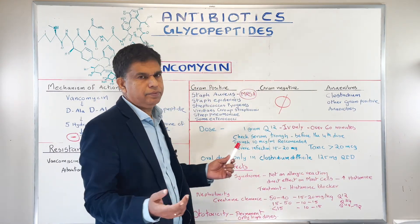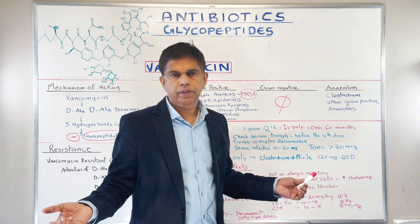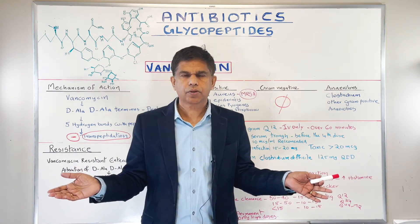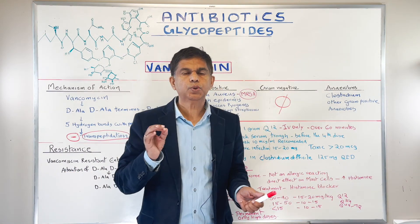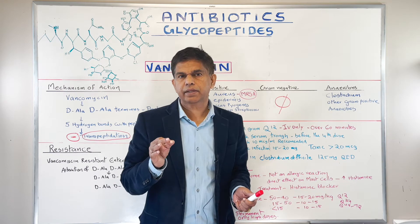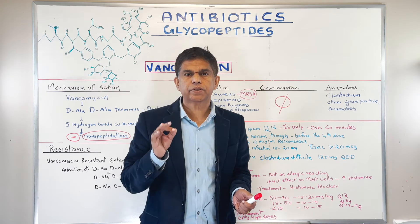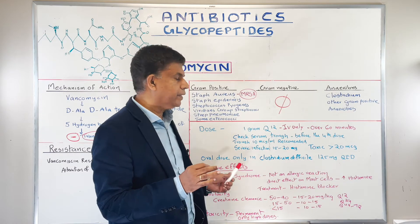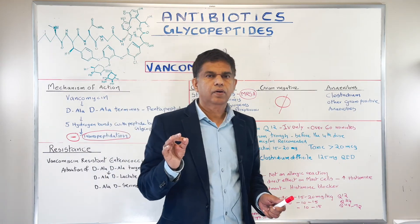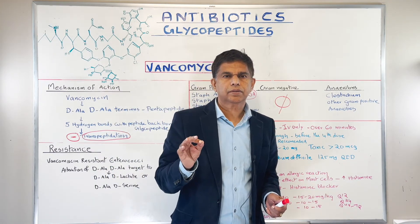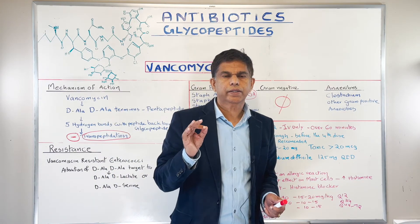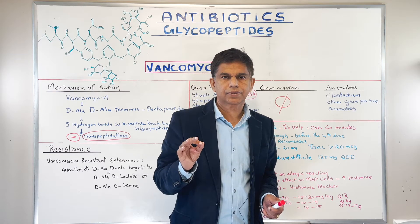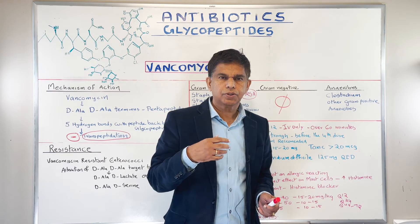For dosing: when kidney function is normal, the standard dose is 1 gram every 12 hours, but give it very slowly — over about a 60-minute infusion. Remember that.